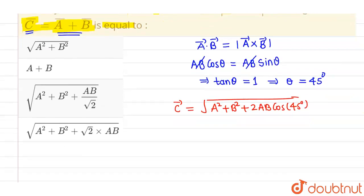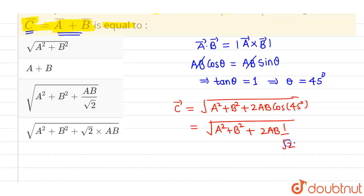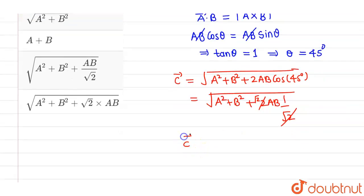The value of cos 45 degrees is 1 by root 2, so this will become A squared plus B squared plus 2AB into 1 by root 2. Now this root 2 will cancel out with 2 and will leave root 2. So overall, the magnitude of C vector will be root over A squared plus B squared plus root 2AB.